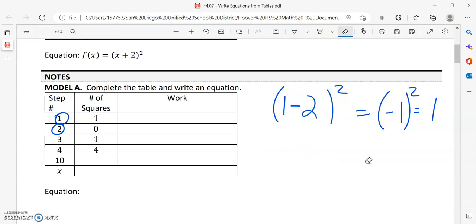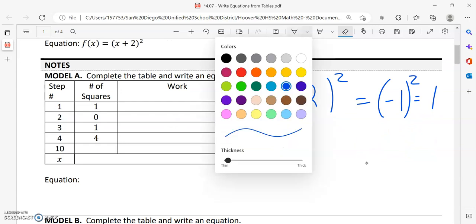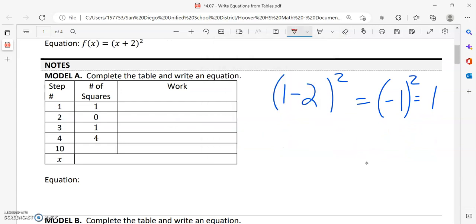Now let's say instead of putting one into the equation, we put in two. So step two, so two minus two squared, that is zero squared, which equals zero. Okay, so far, we're figuring it out.